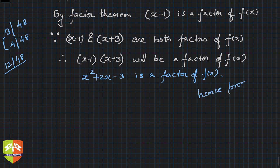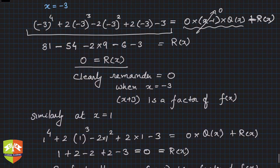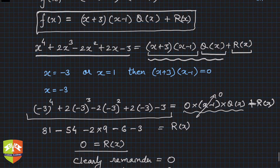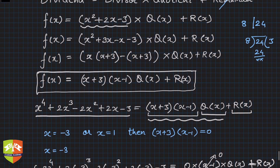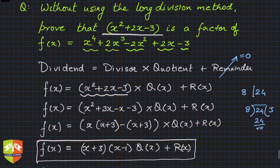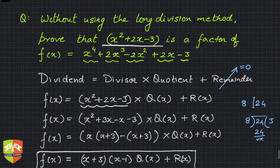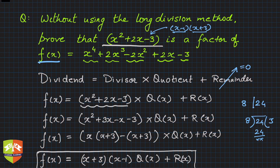So when there is a quadratic divisor, you find its individual linear factors and use the factor theorem twice — once for each linear factor — to prove each is a factor of the polynomial. Then, since both linear factors divide f(x), their product, the original quadratic divisor, also divides f(x). That is how you solve these kinds of problems.